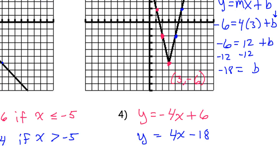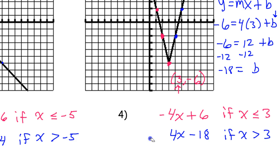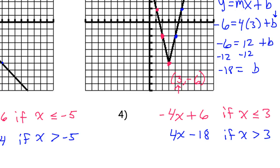Now the conditions. It will be the left branch if x is less than or equal to 3 — the x value of the vertex. For the blue function, if x is greater than 3. Using proper piecewise notation with a brace and calling this f of x. It will always be the x value of the vertex.